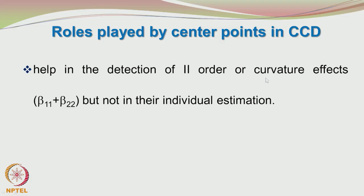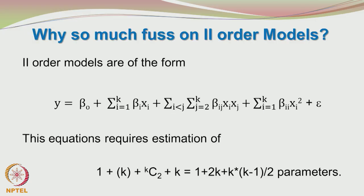To detect this curvature you need the center points. How the center points help you to detect curvature is beyond the scope of this introduction lecture. The center points help to detect the second order or curvature effects, the quadratic terms. It helps to identify whether that beta 11 plus beta 22 is significant or not, but it does not help you to estimate individually beta 11 and beta 22. Where did this beta 11 and beta 22 come from? Let us go back to the model. If you are having only two factors, then I said you will have beta 11 x1 squared plus beta 22 x2 squared. These represent the quadratic terms and also responsible for the curvature in addition to the interaction terms.